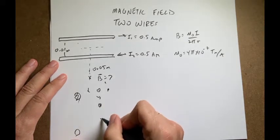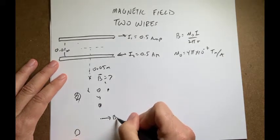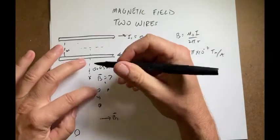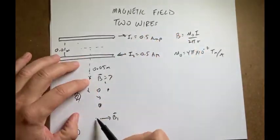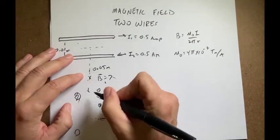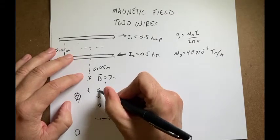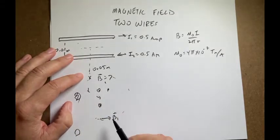The magnetic field due to 1 is going to be this way. B1, right? Because this is a circular path around that wire. And so then I need this distance from here to there and I'm going to find the magnitude of B1.